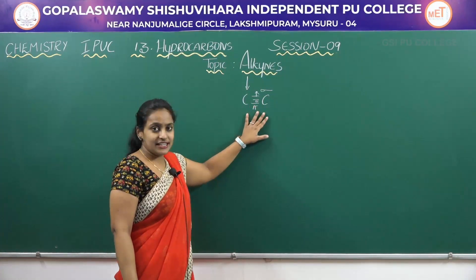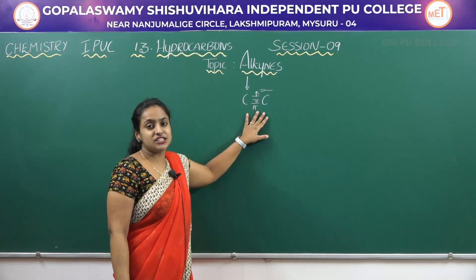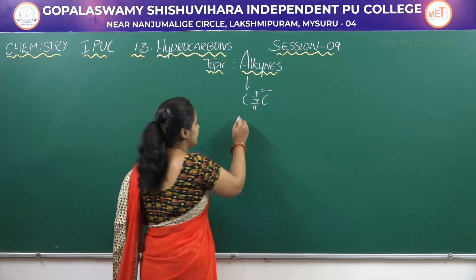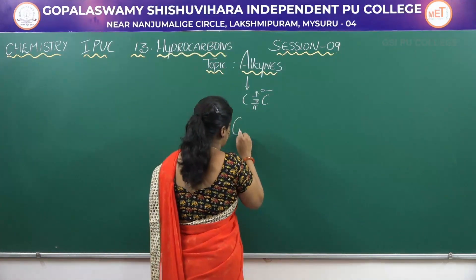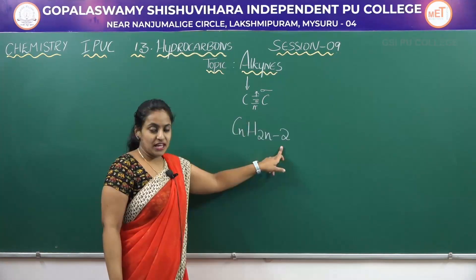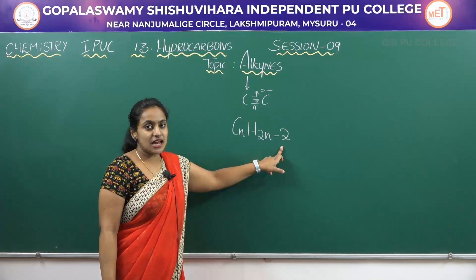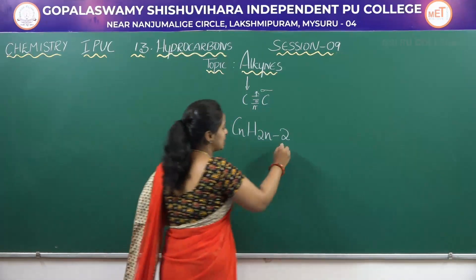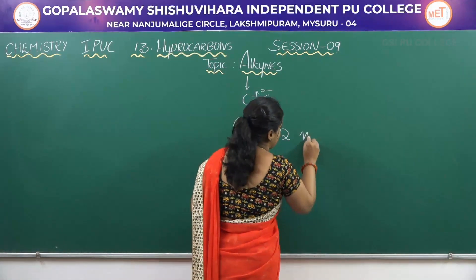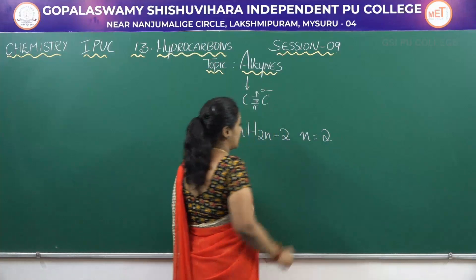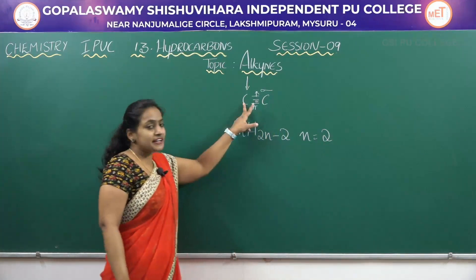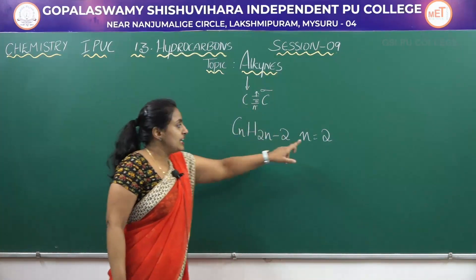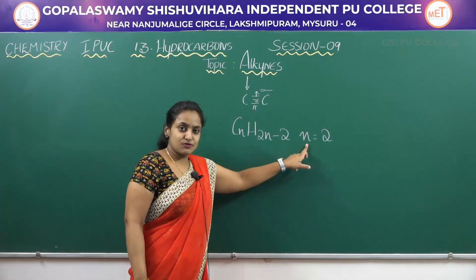These alkynes have the general formula CnH2n-2. N will start from 2, so we need at least 2 carbon atoms.